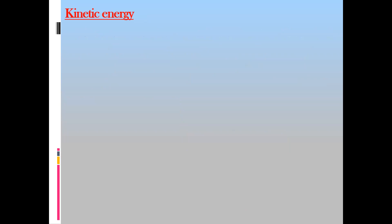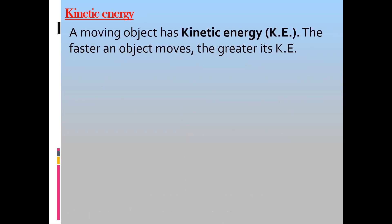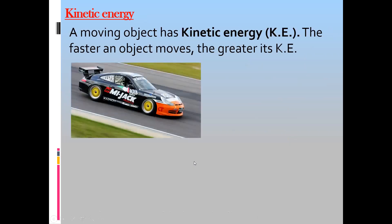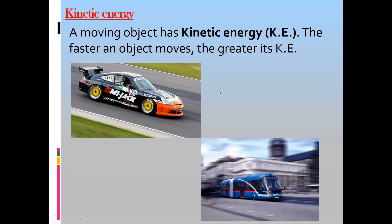The second kind of energy is kinetic energy. The term 'kinetic' refers to anything that is moving. The energy which moving objects have is kinetic energy. For example, a sports car moving on a track has kinetic energy; a bus moving on the road also has kinetic energy. Objects moving faster have greater kinetic energy than those moving slower.